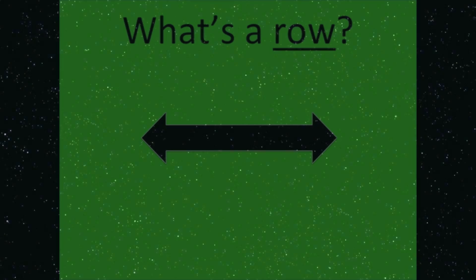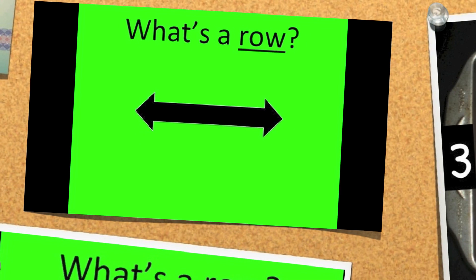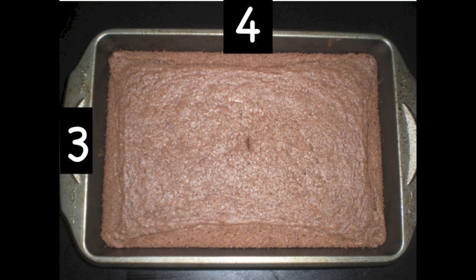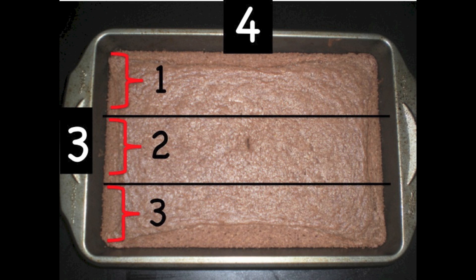What's a row? A row is when parts of a shape go across. Here, let me show you. Let's try breaking this brownie pan into 3 rows, or 3 pieces that go across: 1 row, 2 rows, and 3 rows. This can sometimes get confusing because we only made 2 long slices, but now there are 3 long parts — 3 parts that go across. We call these rows.